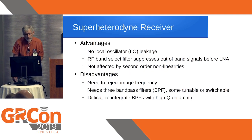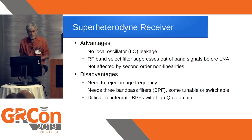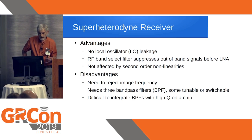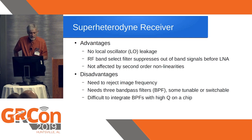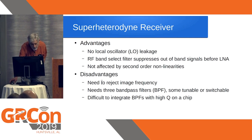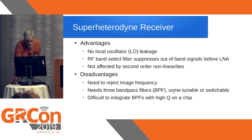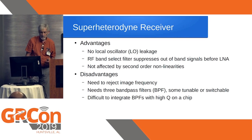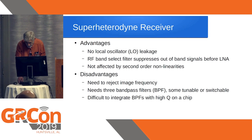Advantages of the superheterodyne: no local oscillator leakage, the RF band-select filter suppresses out-of-band signals before the low-noise amplifier, and it is not affected by second-order nonlinearities. Disadvantages: you need to reject the image frequency, you need three band-pass filters, some must be tunable for wide-range tuning, and it is difficult to integrate high-Q band-pass filters on a chip — so you basically cannot do a system-on-a-chip implementation easily, unlike the analog devices chip found in many software-defined radios.